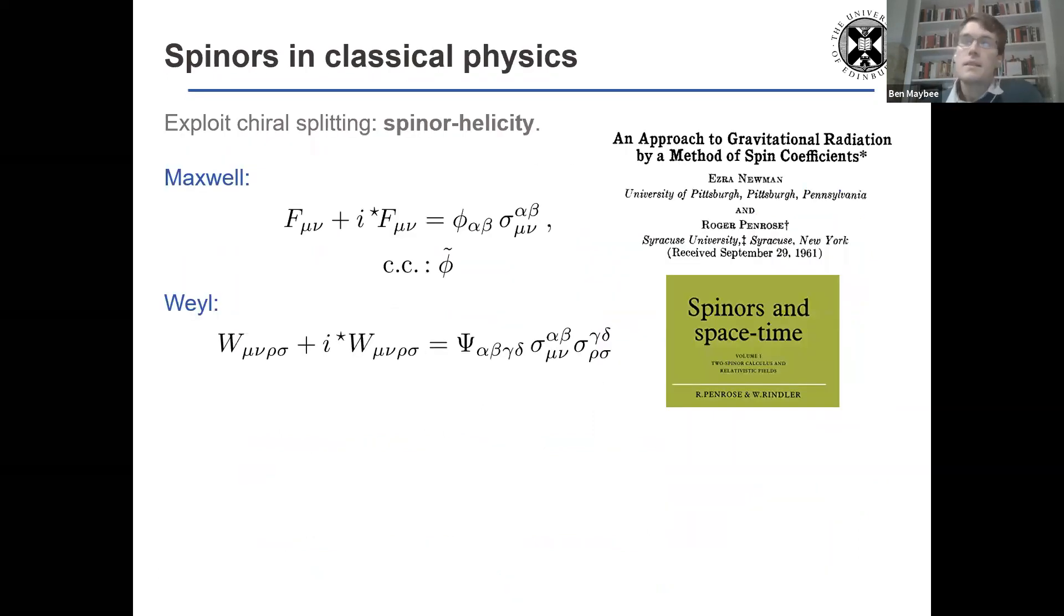Now, spinors are very regularly used in classical physics whenever you have this kind of situation where there's a natural chiral splitting. It goes back to the work in the 60s of Penrose and many others. And in electrodynamics, the typical object is the Maxwell spinor. And the Maxwell spinor is very conveniently defined in the same way in terms of the same chiral F that we have appearing in the worldsheet action.